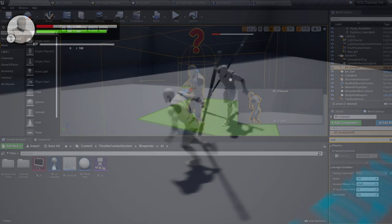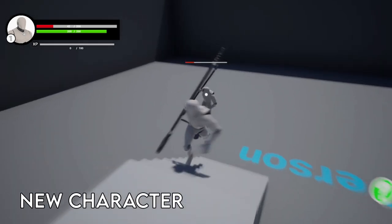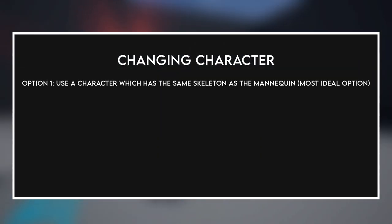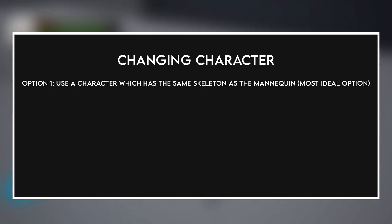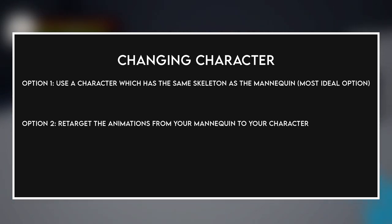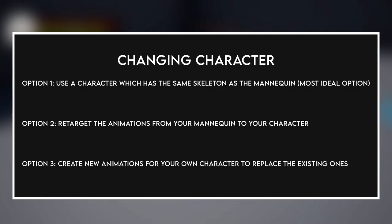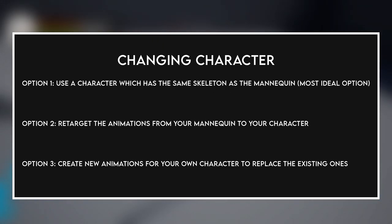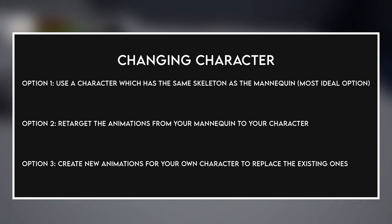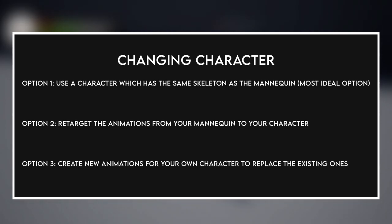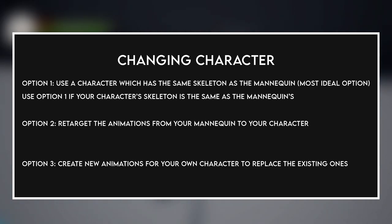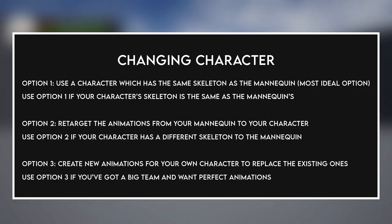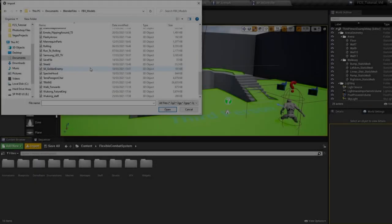Now let's talk about replacing our mannequin with a new character. You have three choices: option one is to use a character with the same skeleton as the mannequin — this is the best and fastest option. Option two is to retarget the animations from your mannequin to your character. Option three is to create entirely new animations for your character, though I personally wouldn't recommend this unless you've got a company, as there are a lot of animations to reproduce.